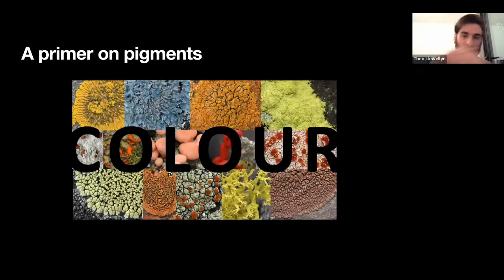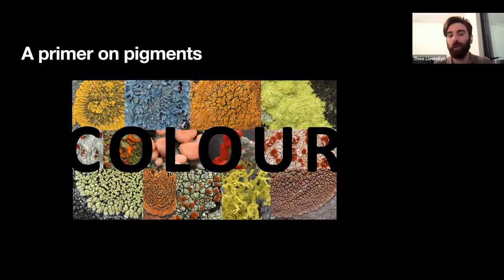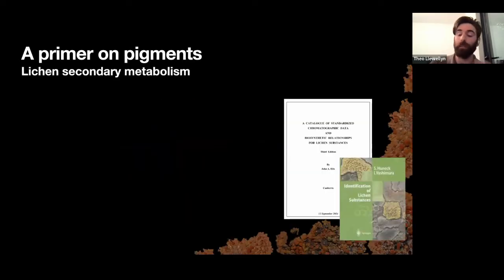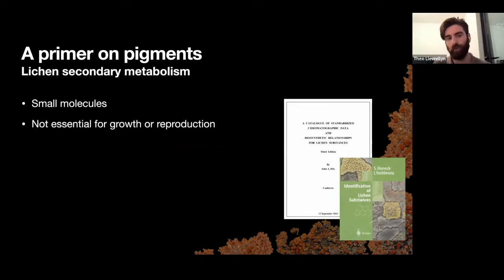One of the first things you might notice about lichens is just how colourful they are — it's one of the things that first attracted me to them. Lichens are famous within the fungal kingdom for producing a whole range of pigments at really high concentrations, giving them these really bright, vivid colours. These pigments are what are known as secondary metabolites — small molecules described as non-essential for growth or reproduction.